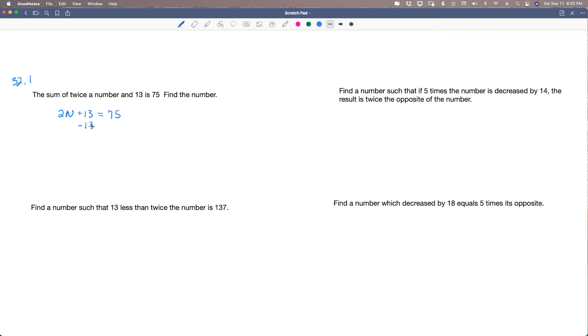We can subtract 13 from both sides. And that cancels. So 2n is equal to 62. We divide both sides by 2, and we find that n is equal to 31. So we would say 31 for our answer on a problem like this.